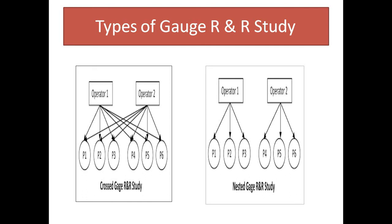In Crossed Gauge R&R study, we have two operators and six parts for measurement. Each operator will measure all six parts. Operator 1 will measure six parts, and operator 2 will measure six parts.